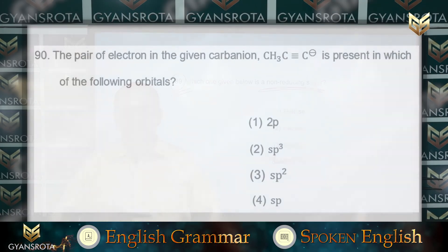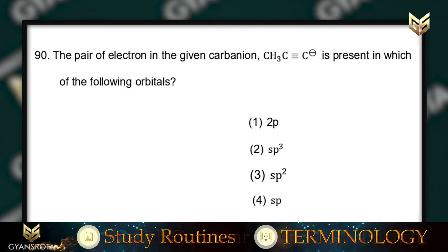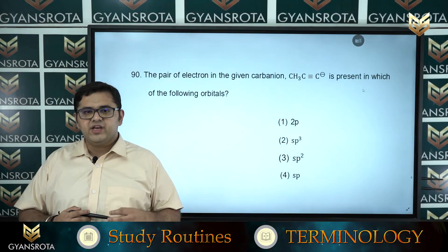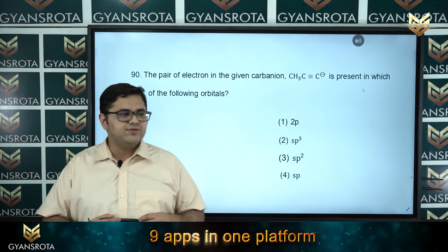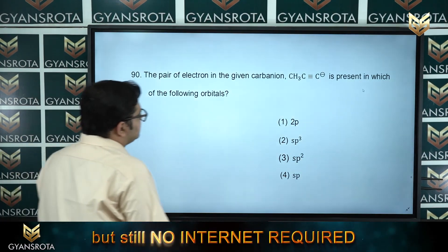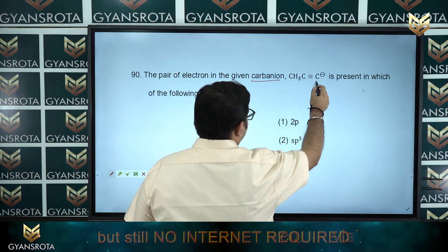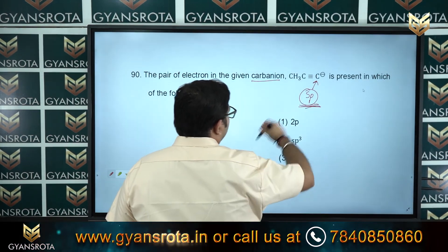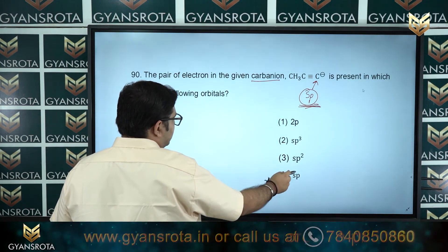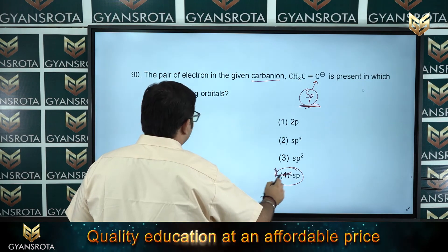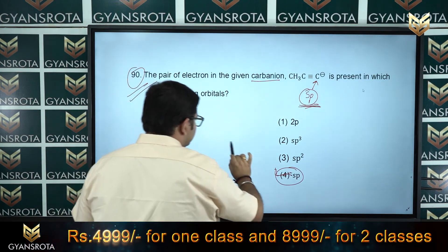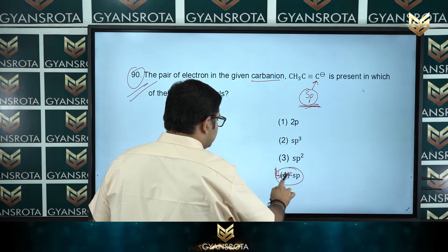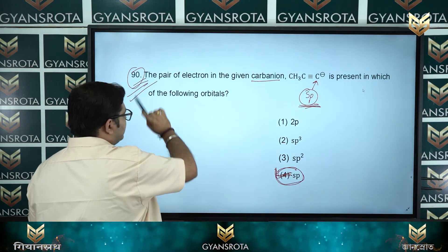Moving to question number 90: the lone pair of electrons in the given carbanion is present in which orbital? This is a basic question. In the case of a carbanion, the carbon is sp³ hybridized, so the lone pair is present in an sp³ orbital. Option number 4 is the correct answer of question number 90.